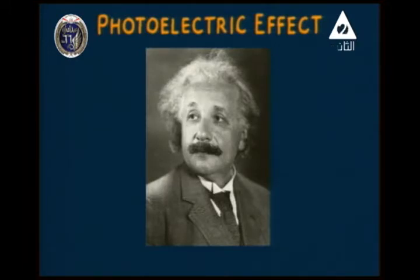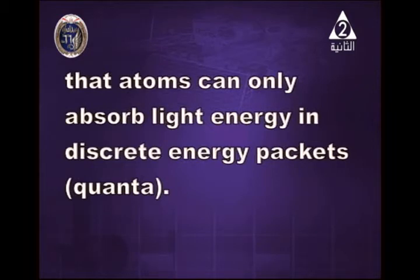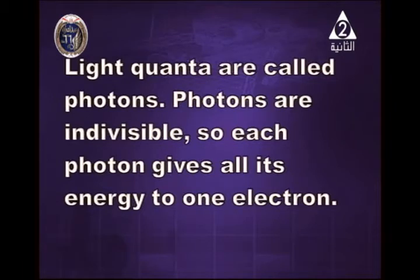As a matter of fact, Einstein tackled photoelectricity in 1905. He saw that all experimental laws could be explained if it was assumed that atoms can only absorb light energy in discrete energy packets — we call it quanta, or photons. Light quanta are called photons. Photons are indivisible, so each photon gives all its energy to one electron.